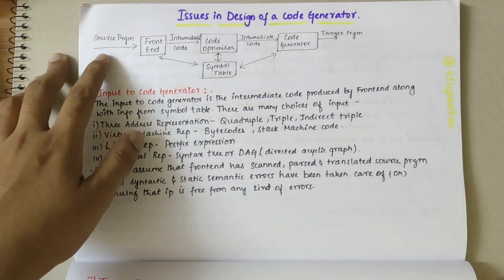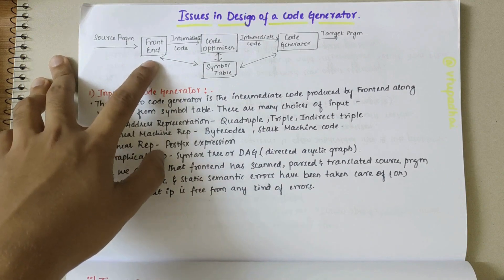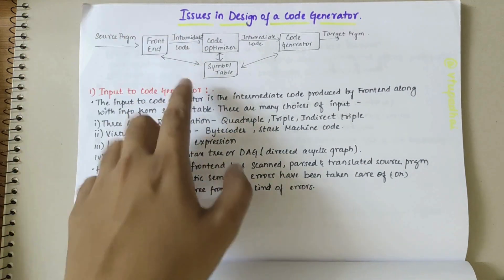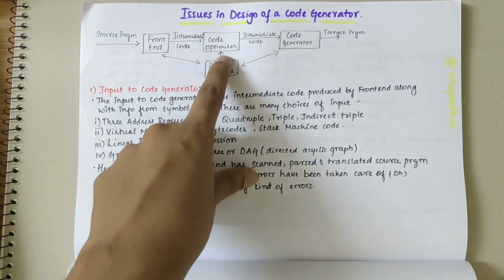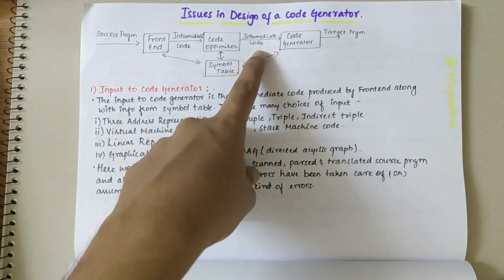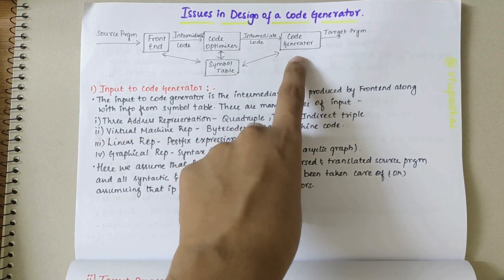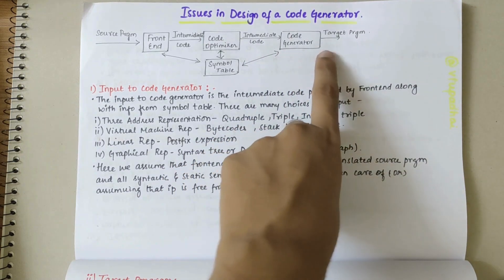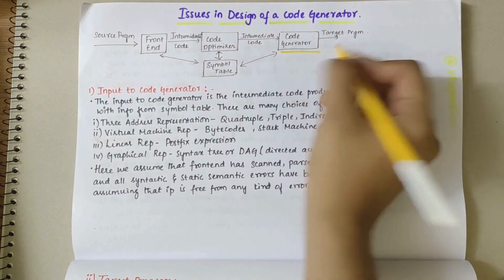We know that the input is taken as the source program, and in the front end we have lexical analyzer, semantic analyzer, and syntax analyzer. From there we get the intermediate code which is given as input to code optimizer. From code optimizer we get the optimized intermediate code which is taken as input to the code generator, and from code generator we obtain the target program. Code generator is the last phase of compiler here.